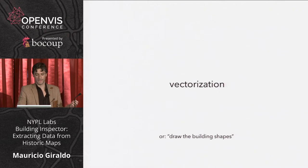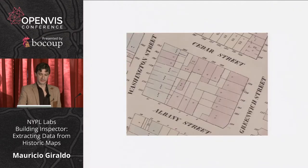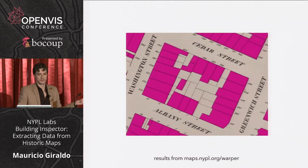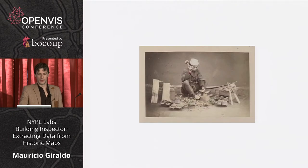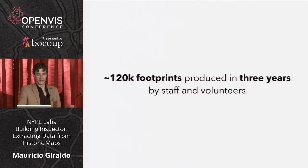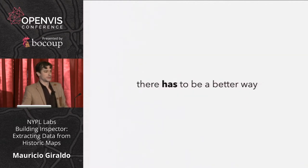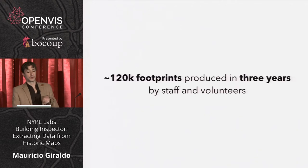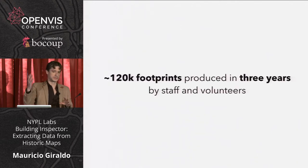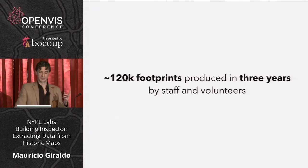About 120,000 footprints were produced in about three years by staff and volunteers. So there has to be a better way. 120,000 — that's a lot — but this is just Manhattan and Queens for one year, 1853.